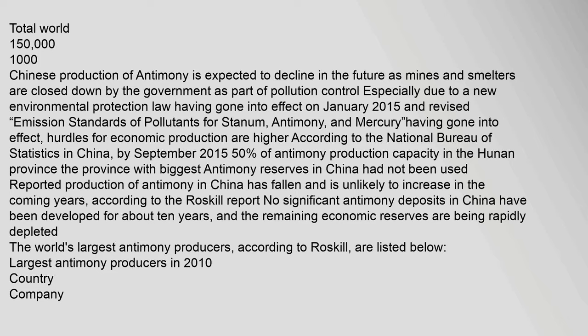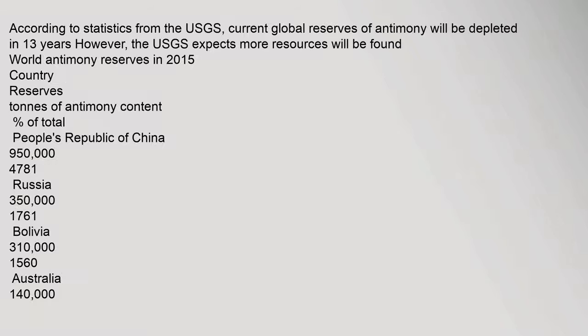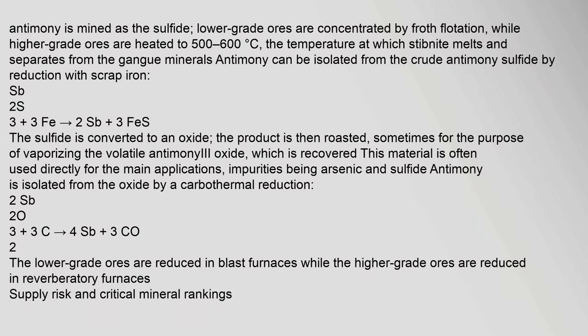The world's largest antimony producer in 2010 was China Tin Group at 20,000 tonnes per year. According to USGS statistics, current global reserves of antimony will be depleted in 13 years, though the USGS expects more resources will be found. Antimony is mined as the sulfide; lower grade ores are concentrated by froth flotation, while higher grade ores are heated to 500–600°C.